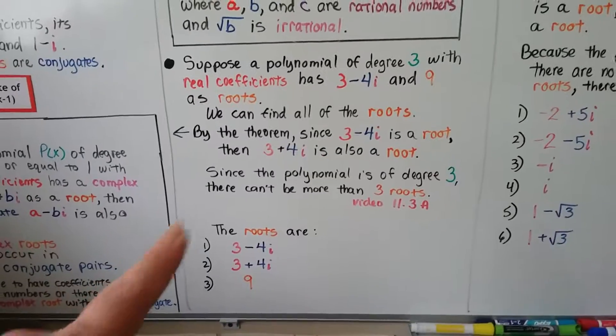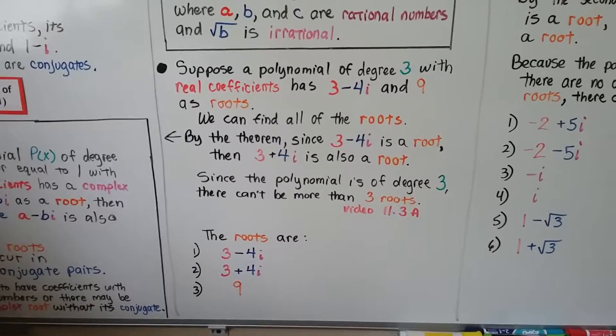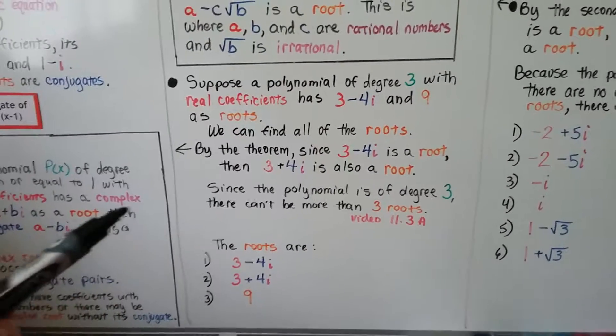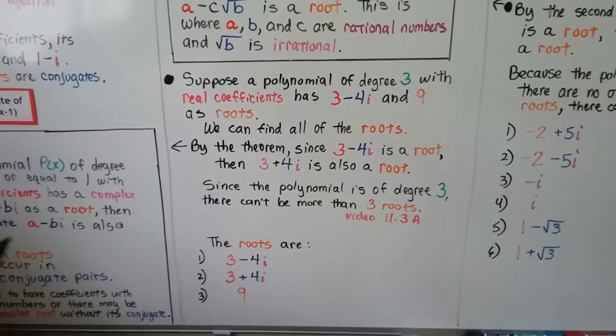That means the roots are 3 minus 4i, 3 plus 4i, and 9. It's of degree 3. We can't have more than 3 because it's of degree 3.